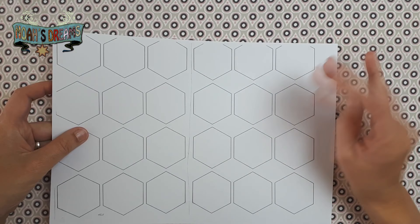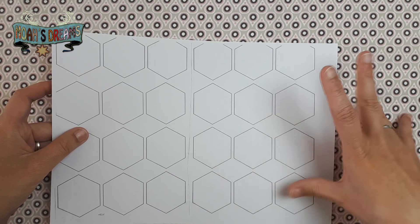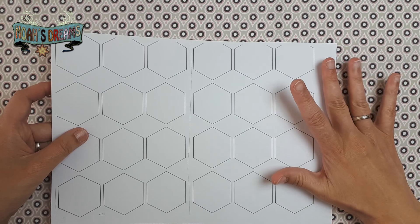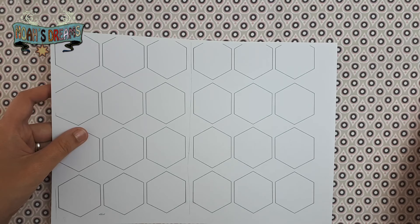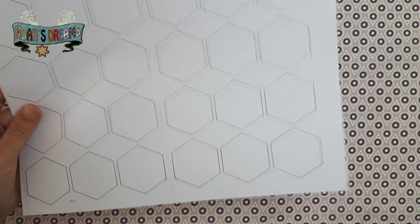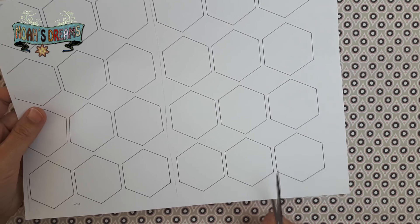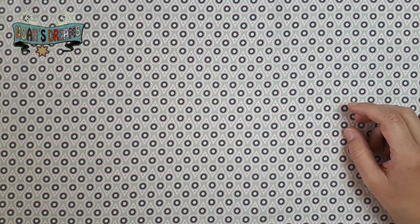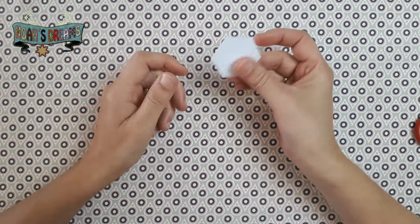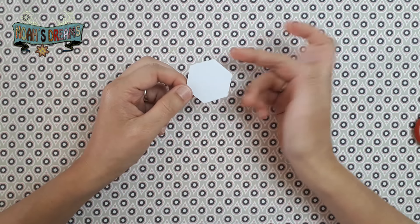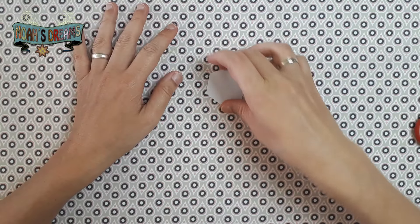Lo primero que vamos a necesitar son unas plantillas, yo me las he sacado de Google, plantillas de hexágonos, que en mi caso son como de una pulgada por cada lado. Y recortar las piezas. Yo lo hago en tacos de folios de 8 o 10 folios o folletos, panfletos que no utilicéis y tendríamos estas plantillas.